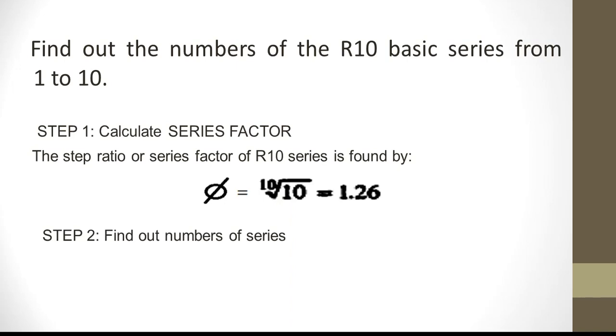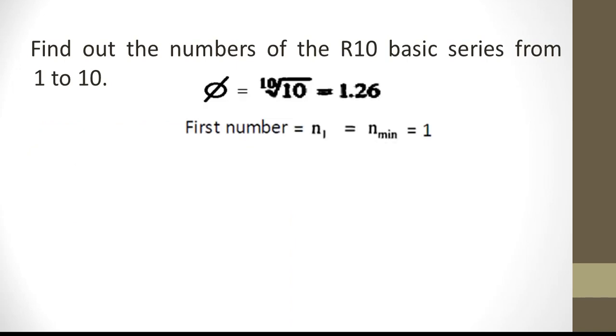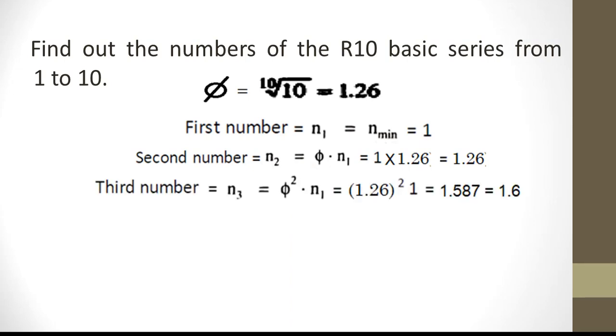Next we will find out the numbers of the R10 series from 1 to 10. First number is 1 which is the minimum number. N2 is step ratio into N1, which is phi into N1, which is 1.26.